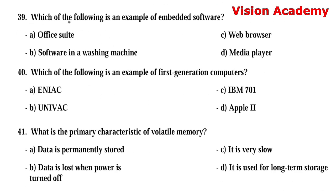Question 39: Which of the following is an example of embedded software? Option A: office suite. Option B: software in a washing machine. Option C: web browser. Option D: media player. Option B, software in a washing machine, is the right answer.